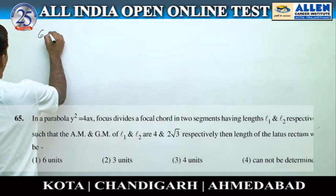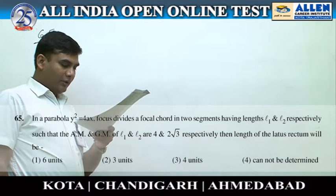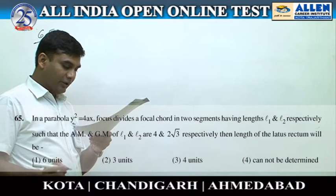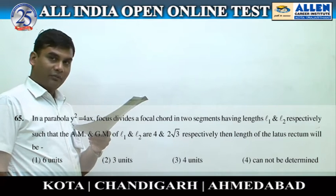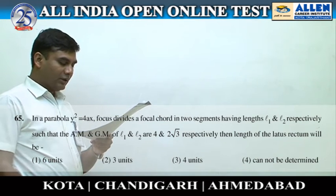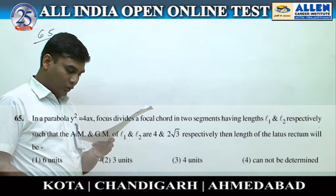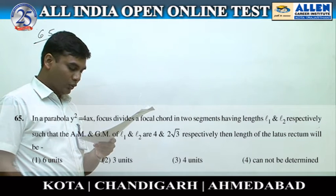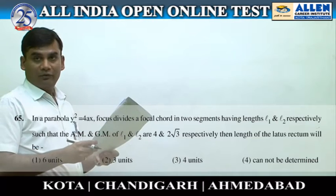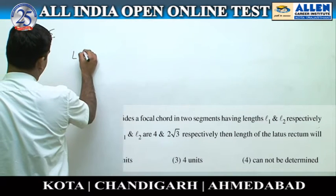Question number 65: In a parabola y² = 4ax, the focus divides a focal chord into two segments having length l1 and l2 respectively, such that the arithmetic mean and geometric mean of l1 and l2 are 4 and 2√3 respectively. Then the length of the latus rectum will be. We know that the length of the latus rectum L